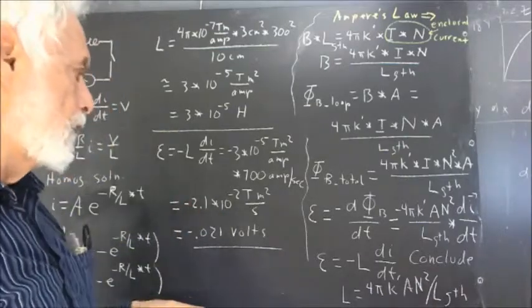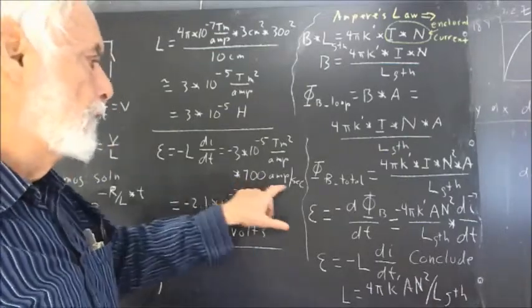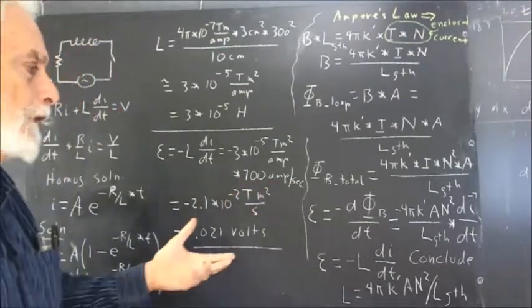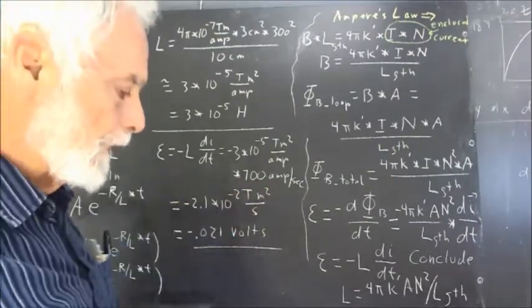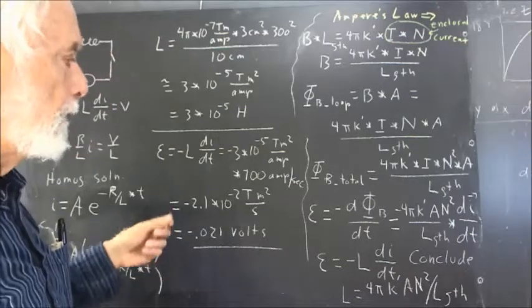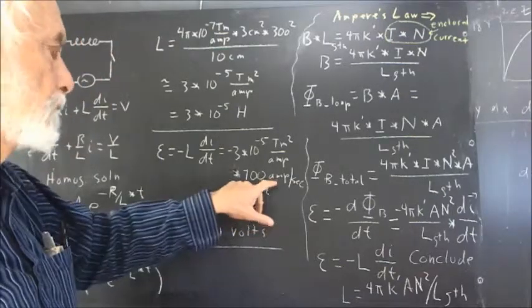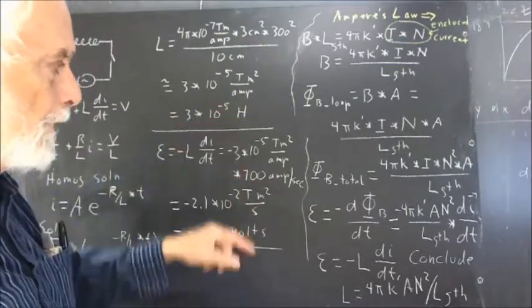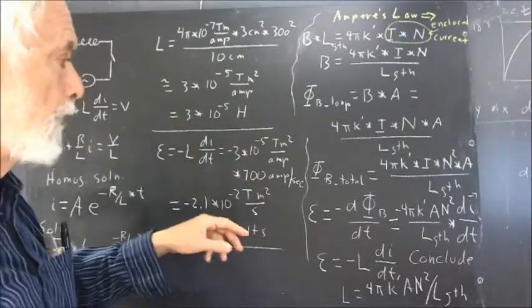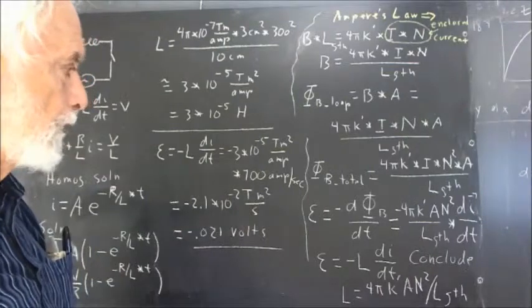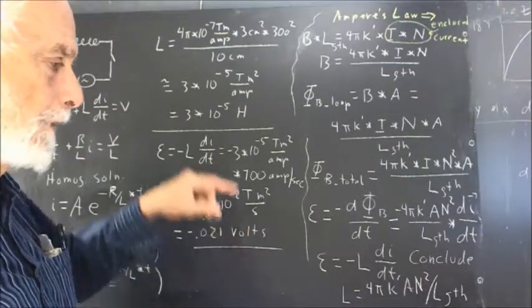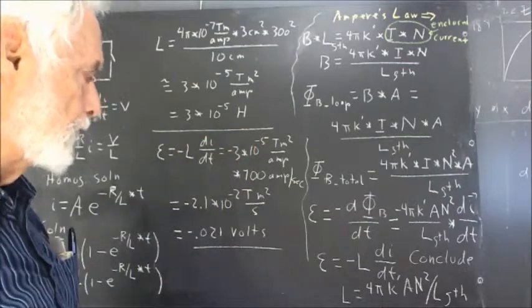Now let me give you an idea whether that's a realistic rate of change of current. If we consider a 60 cycle per second current, the rate of change of the current goes from maximum to zero in a quarter of a cycle, from zero to minimum in a quarter cycle, from minimum to zero in a quarter cycle, and then from zero to maximum in a quarter cycle.